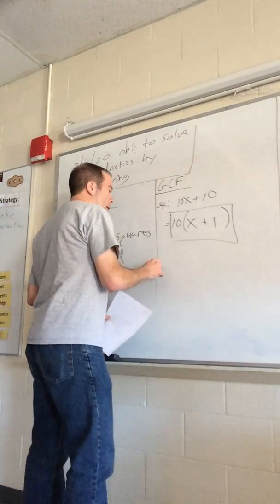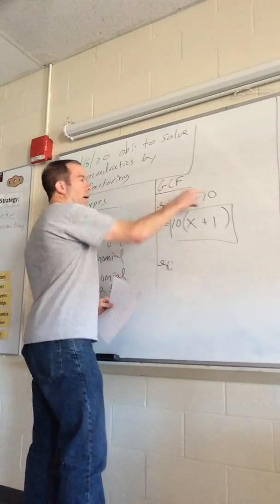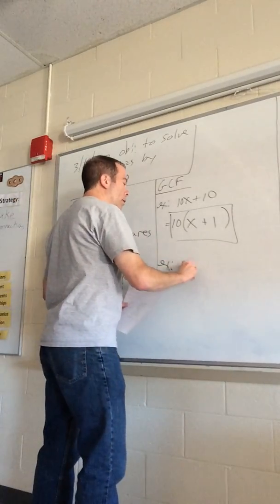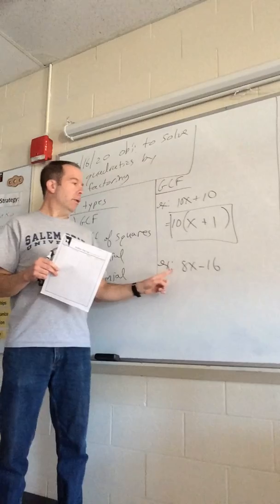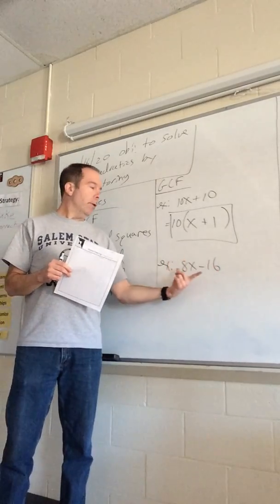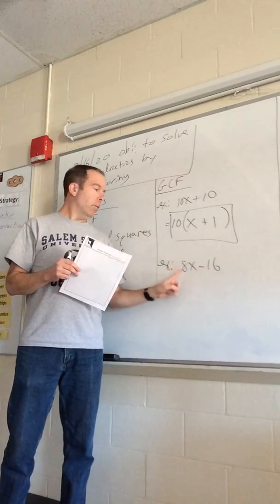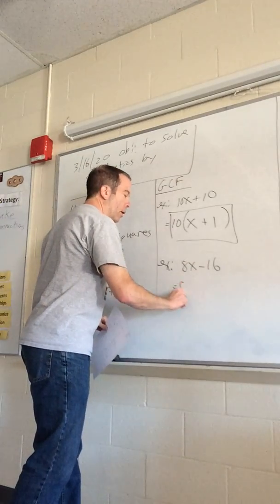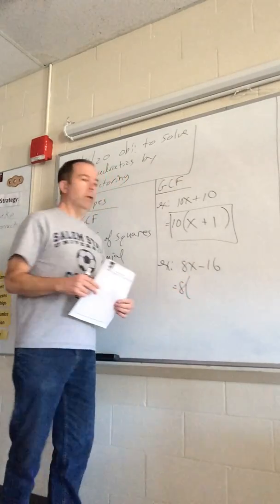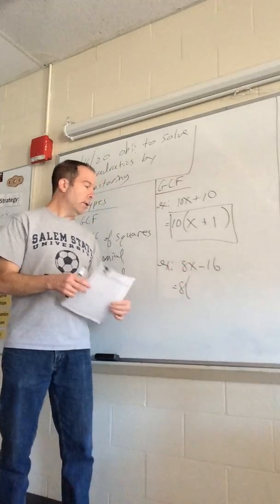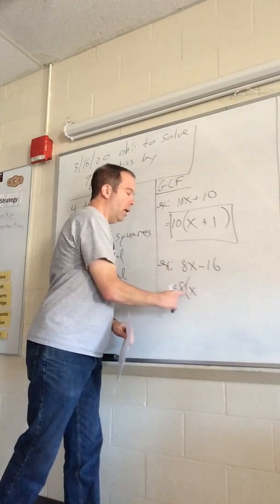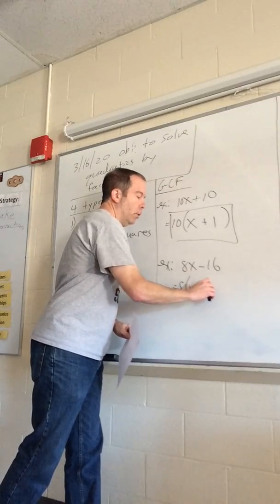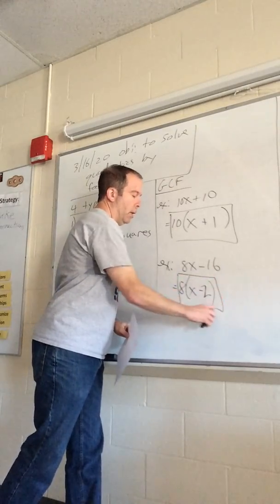This next one is not quite as obvious because they don't have the same number, but there is a number that goes into both. The number that goes into both 8 and 16 is 8, so we factor out an 8. Eight times what makes 8x? That's x. And 8 times what makes negative 16? That's minus 2. Done.